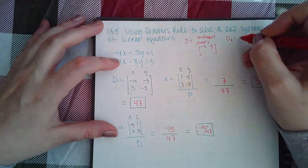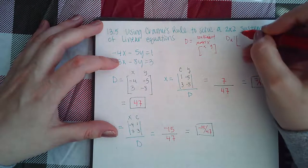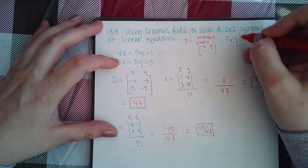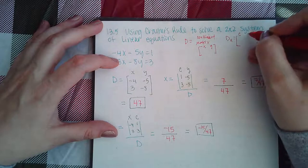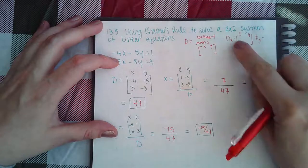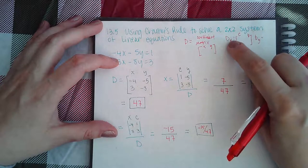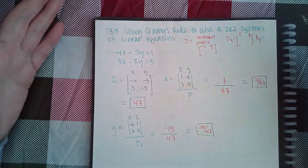And so then this matrix is actually going to be, you're going to replace the x with the constants. So the x column is now the constants, and then the y stays the same. Whatever the subscript is here, that's the column that you replace with the constants.